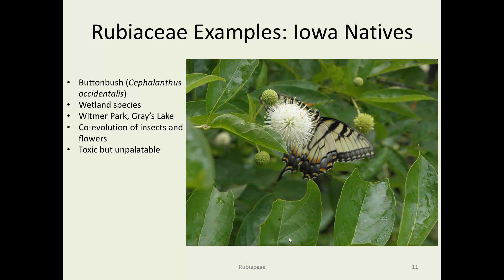This is a beautiful example of co-evolution: the insect has evolved mouth parts to tap nectar from the flower, and the plant has developed a flower that fits the insect perfectly — with pollen exchanged in the process, so the plant gets pollinated and the insect gets fed. Button bush is toxic to cattle and other animals, but generally they don't taste good, so the incidence of poisoning is fairly low.